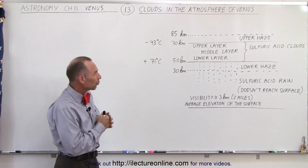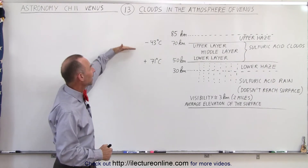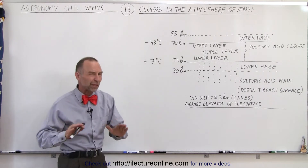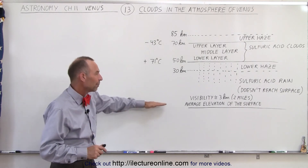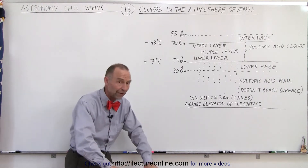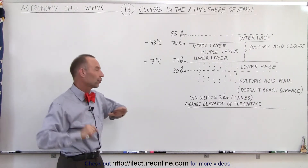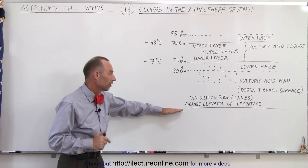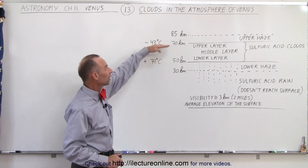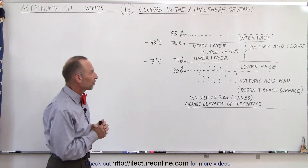So, the clouds — where are they? They are situated somewhere between a height of 50 and 70 kilometers above the surface. When we say 'above the surface,' we mean above the average elevation, because there are some low valleys and some high mountains. Taking the average elevation as the start of the surface, between 50 and 70 kilometers is where we find the clouds in the atmosphere of Venus.